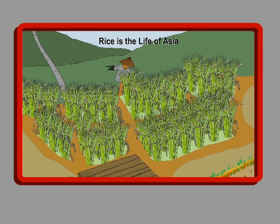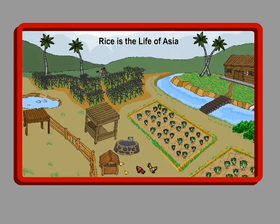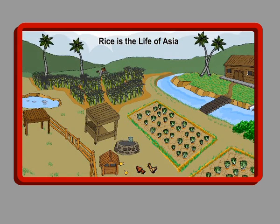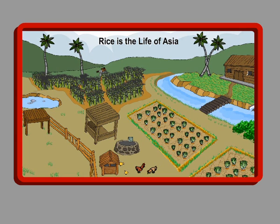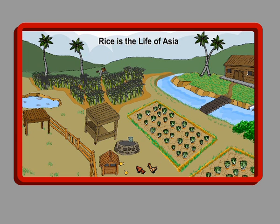Rice is life to the people of Asia, feeding almost 3 billion people. At one time, there were hundreds of thousands of varieties. Now, most of them are gone because of bad agricultural and corporate practices.